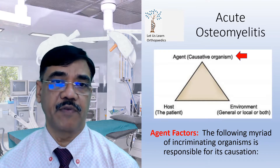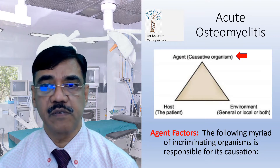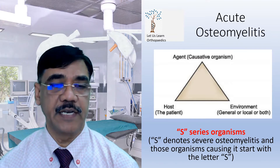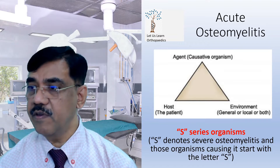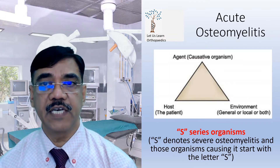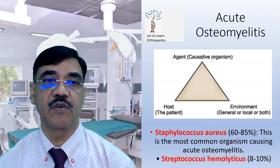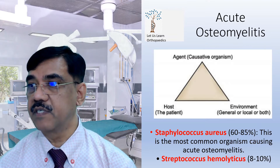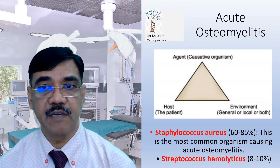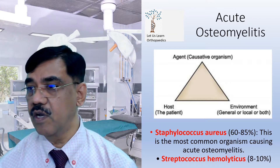Looking at the agent factors, a myriad of incriminating organisms are responsible for causation. There are S-series organisms — S denotes severe osteomyelitis, and these organisms start with the letter S. The first is Staphylococcus aureus, which causes 60 to 85% of osteomyelitis cases. This is the most common organism causing acute osteomyelitis.